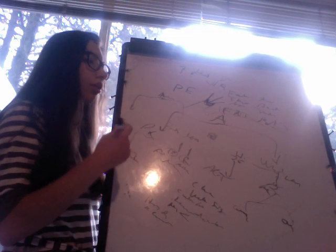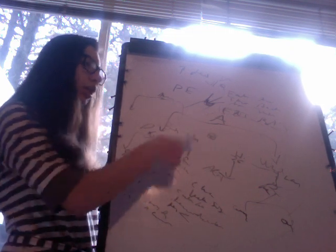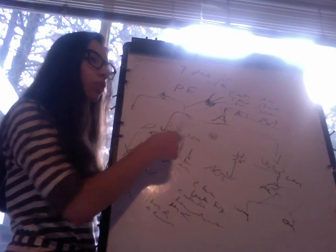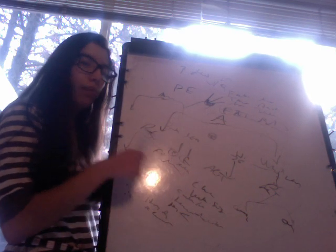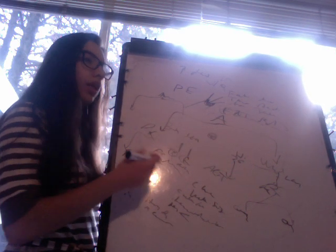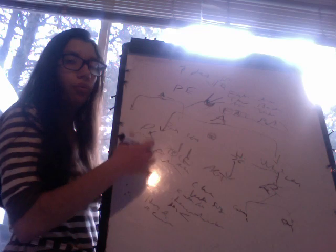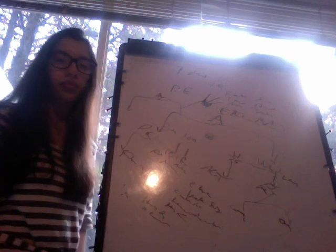Lines of Zahn are only present if the thrombus formed pre-mortem. If the patient has already died and we examine the thrombus, we would not see Lines of Zahn. This allows us to distinguish whether the thrombus formed while the patient was alive or after death.